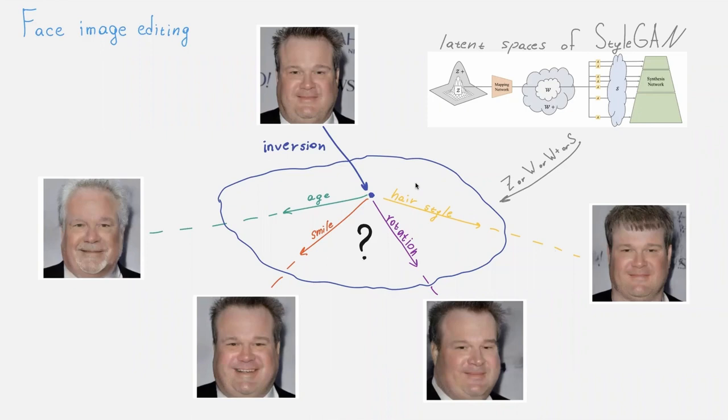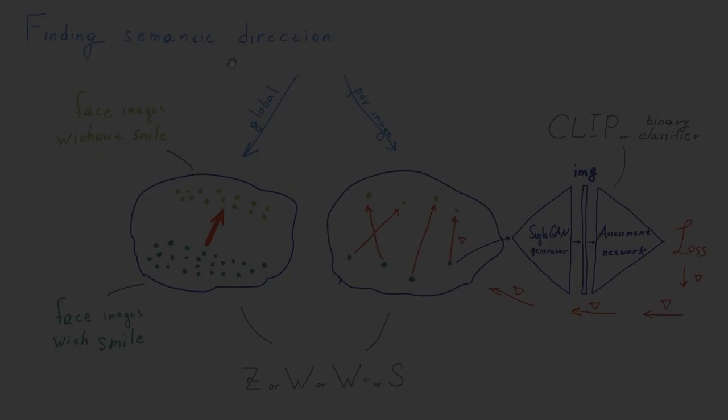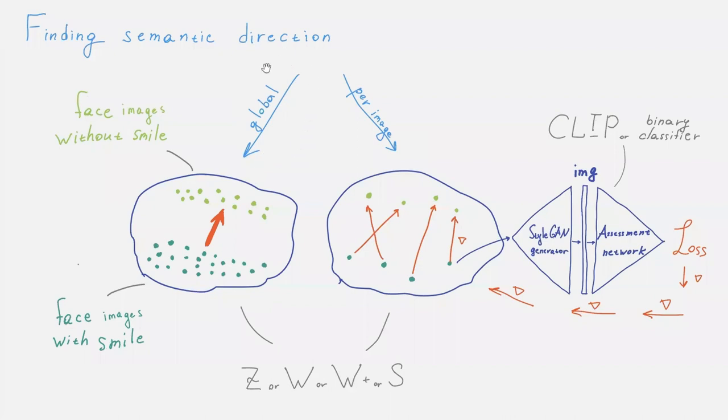There are two types of editing. Editing is a movement of a point in one of the high-dimensional latent spaces like Z, W, W+ or S space in direction which corresponds to desired attribute like a smile or hairstyle. The problem is to find this direction. The first class of approaches is based on averaging a direction in latent space correlated with the given attribute over a number of contrastive pairs with and without a desired attribute.